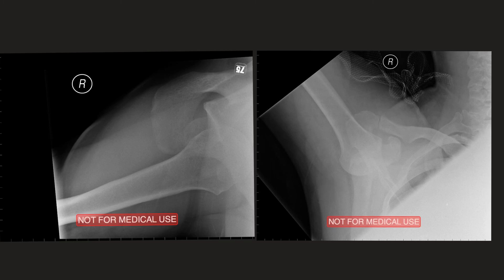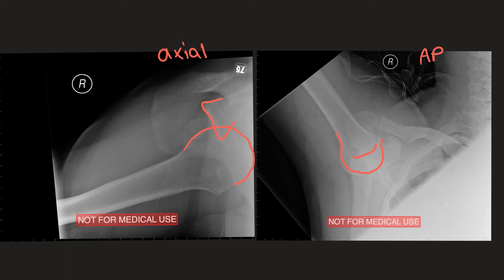On this last case, on the right we have an AP film and on the left an axial film. You can see that the patient has presented with their arm abducted and the humeral head has moved inferiorly in relation to the glenoid. This is in keeping with luxatio erecta. On the axial film, you can see that the glenoid is not at all congruent with the humeral head.